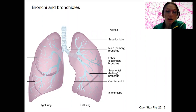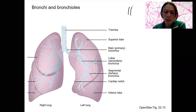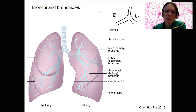The trachea is going to divide into bronchi. Bronchus is singular. We've got one tracheal tube and it's going to divide into two bronchi — a right and a left primary bronchi.